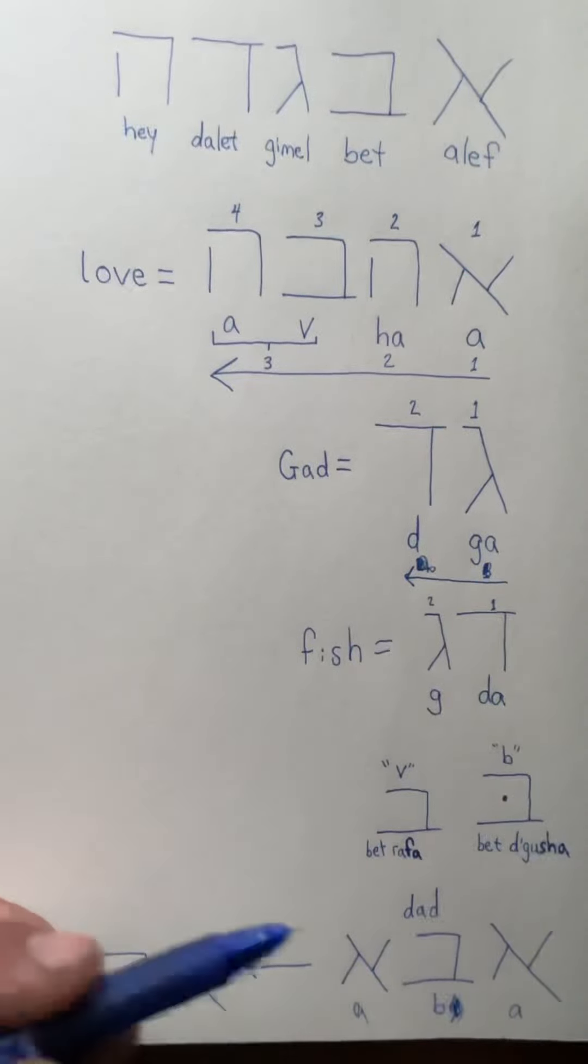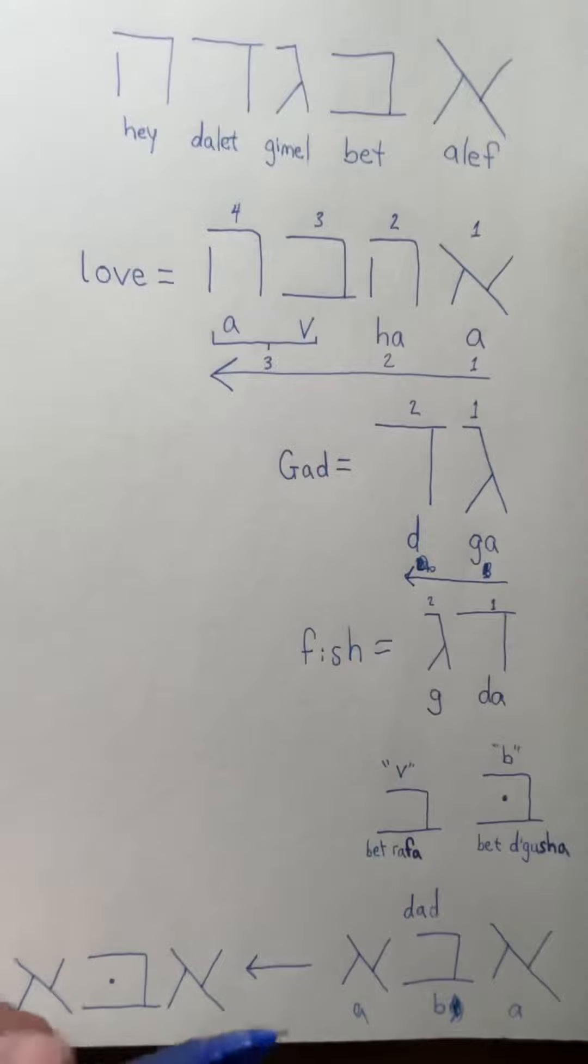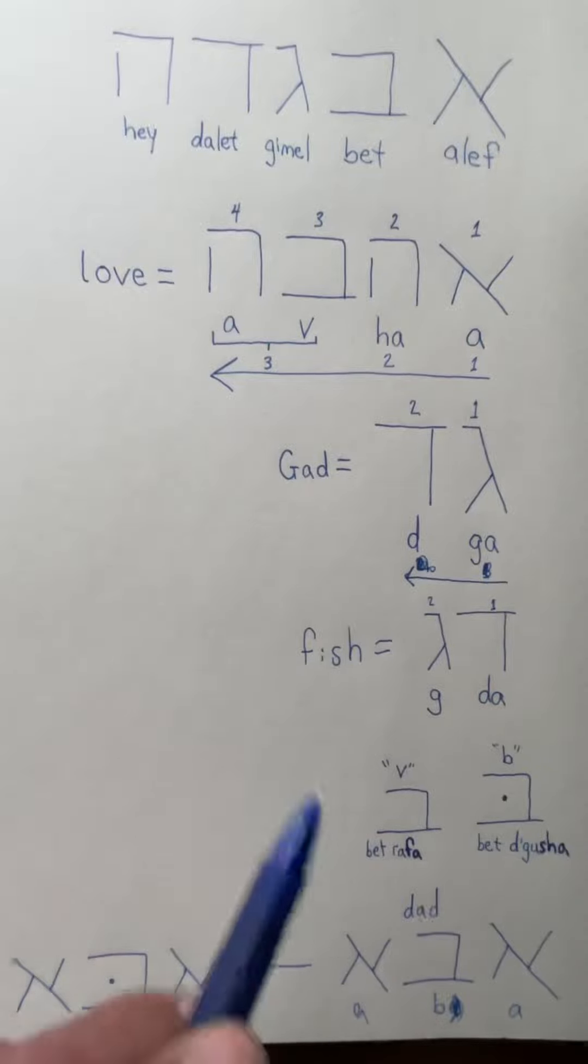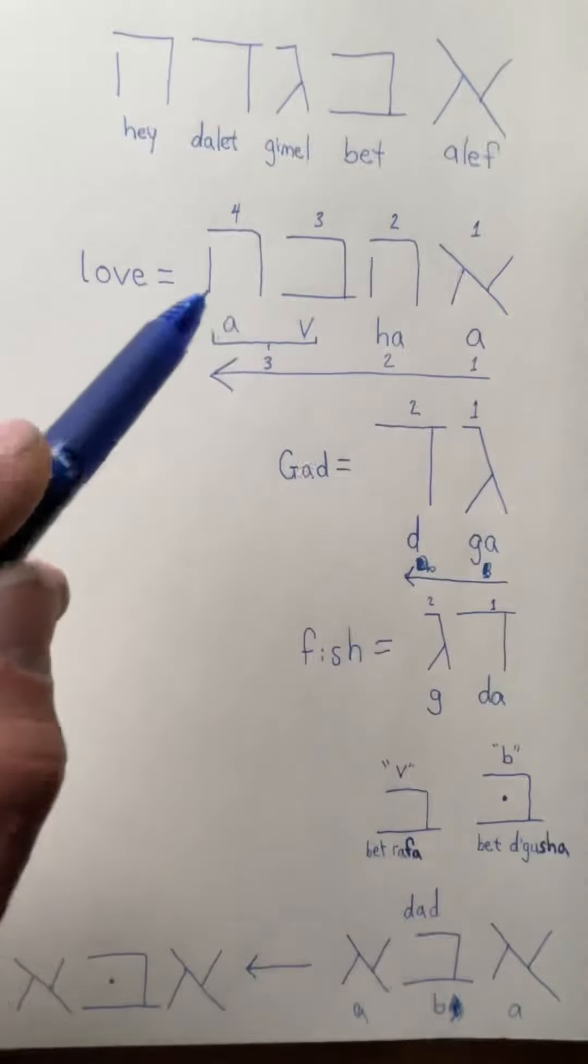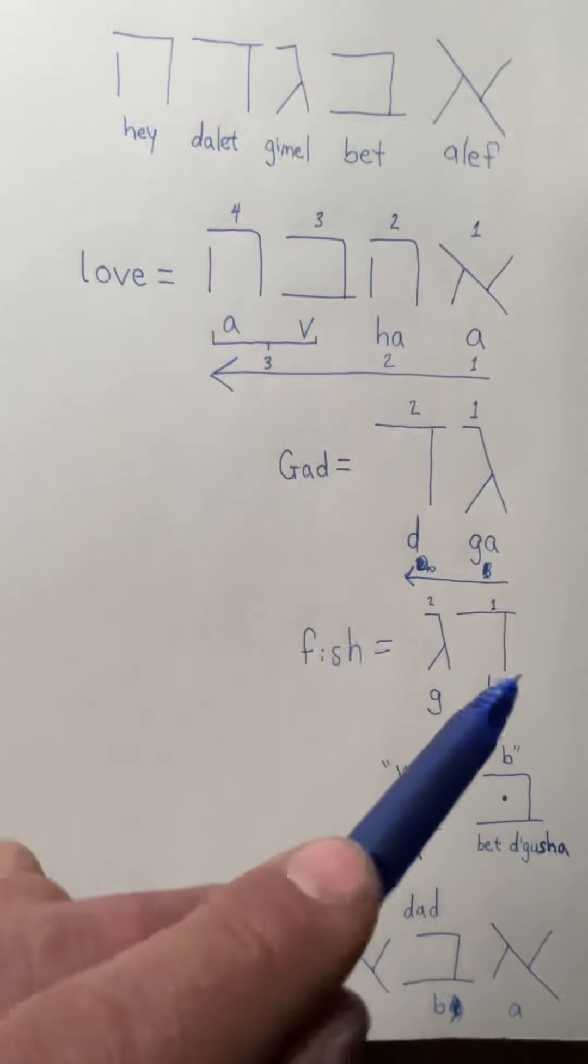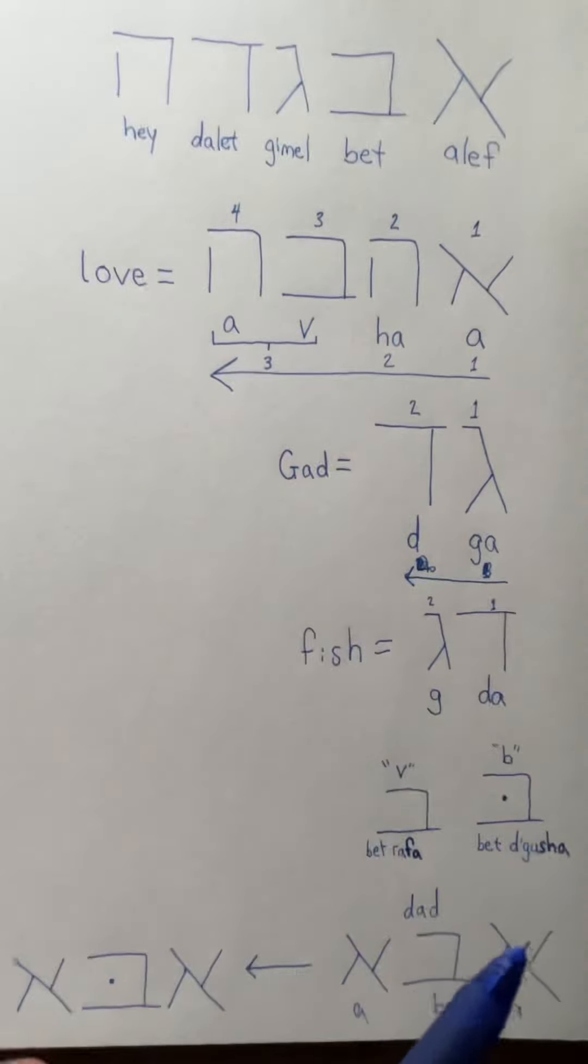Technically it would be abba. So in Hebrew they do say abba, it's emphasized on the end if that makes sense. And it's read from right to left - that's why I put these arrows here, read from right to left. And here I put the dagesh in the bet so that you could see abba. So yeah, that's pretty much all you need to know for now for these letters, first five letters of the alphabet.